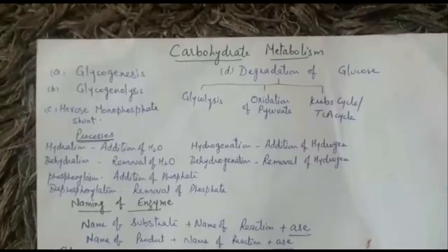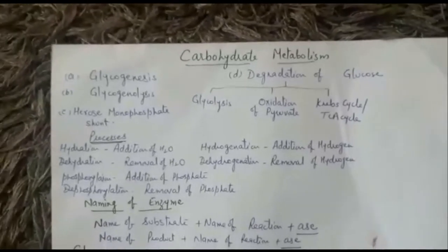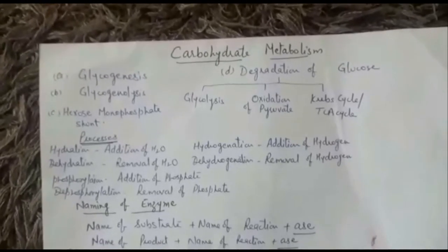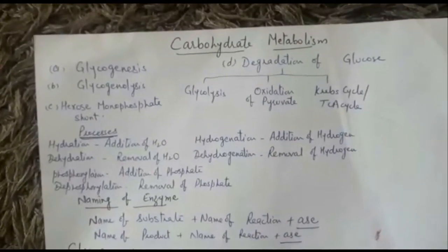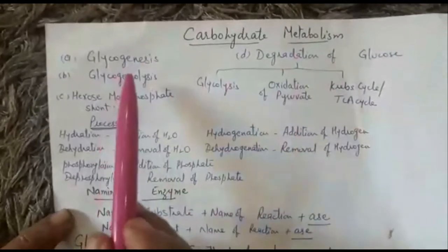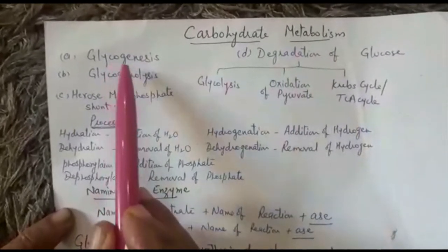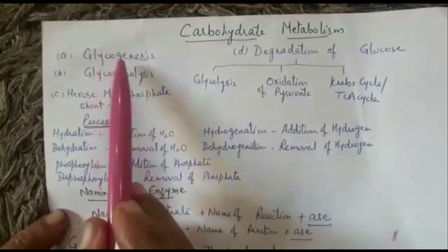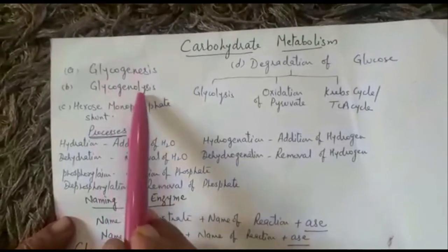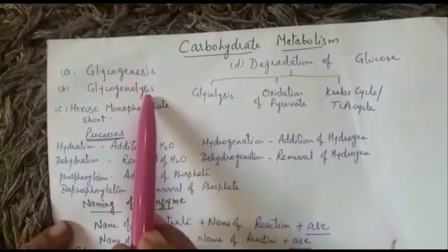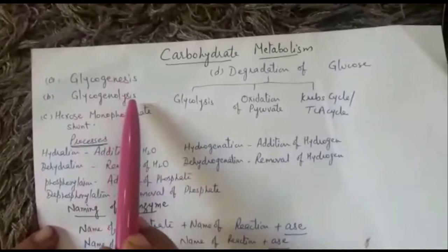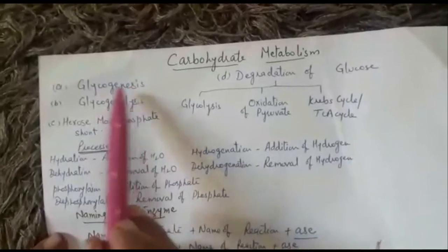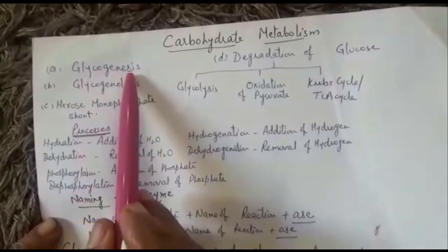Hello dear students, hope you all are fine. We have covered carbohydrates, and after complete study of carbohydrates we will shift to carbohydrate metabolism, which comes under Unit 2. Under carbohydrate metabolism we will study different processes like glycogenesis — genesis means synthesis, so glycogenesis means synthesis of glycogen — and glycogenolysis, where lysis means breakdown of glycogen into glucose.